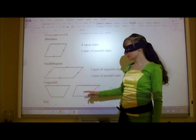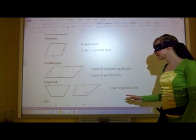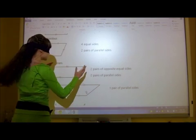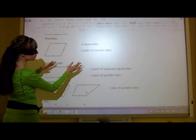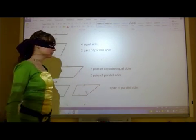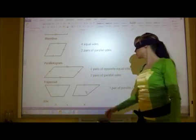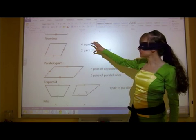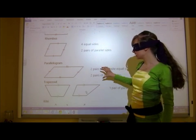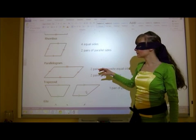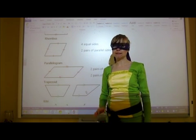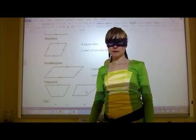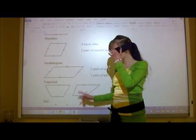Now we've got a parallelogram — it's fun to say. A parallelogram also has two pairs of opposite equal sides, just like the rectangle where these are equal length and these are equal length. It also has two pairs of parallel sides. You'll notice these could also be a square or a rectangle, but the difference is that rhombuses and parallelograms do not have right angles at all.